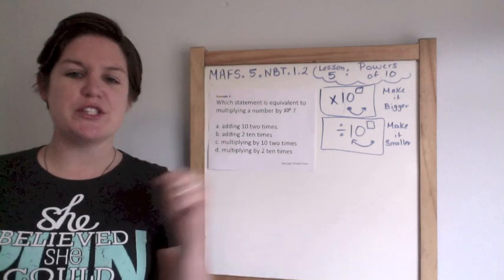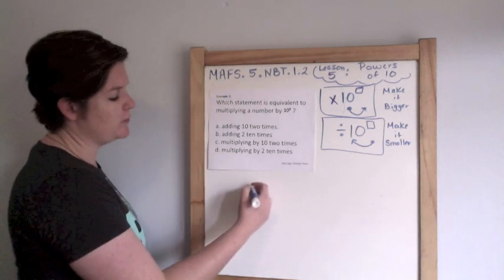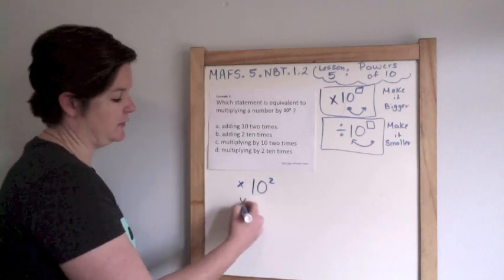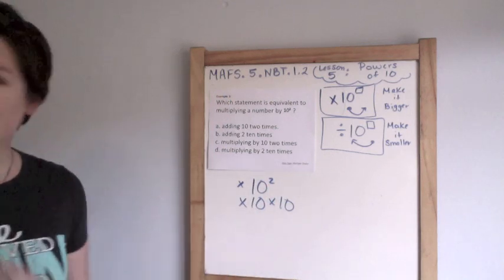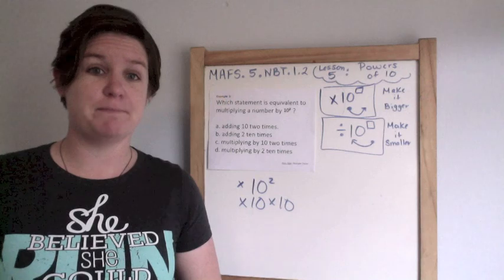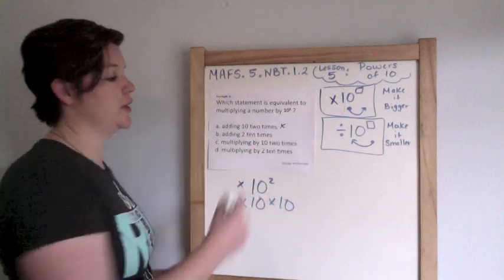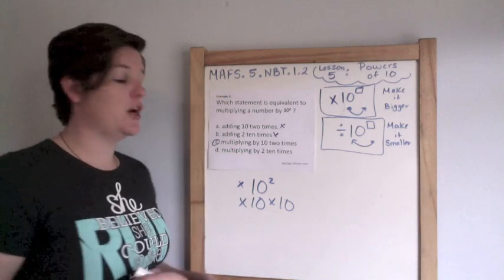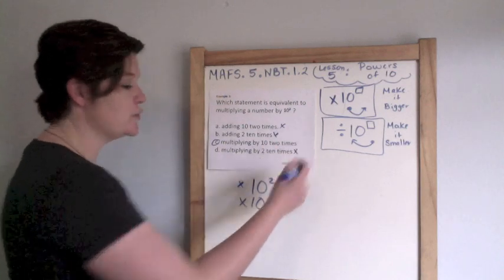Example three. Which statement is equivalent to multiplying a number by 10 to the second power? When you multiply a number by 10 to the second power, you are multiplying by 10 by 10. Multiplying by 10 two times. So that's what you're doing. Are you adding 10 two times? No. Are you adding 2 ten times? No. Are you multiplying by 10 two times? Yes. Don't get confused. Read it carefully.